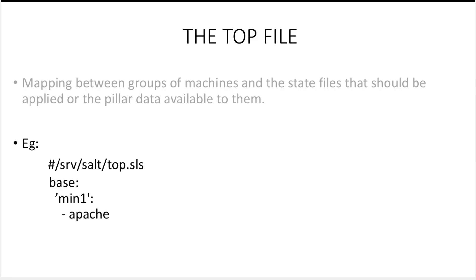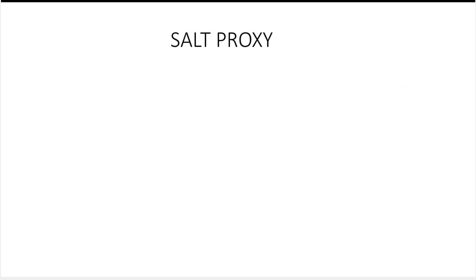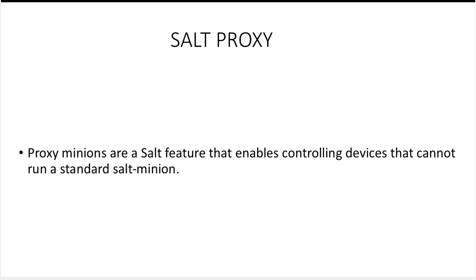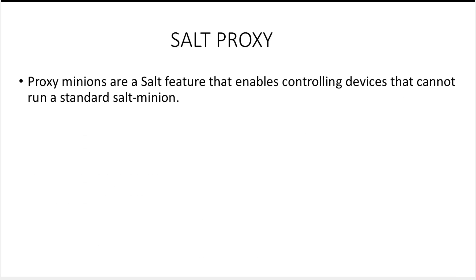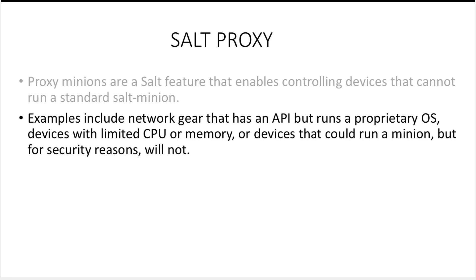So we are going to explore pillar, state file, and top file in much more detail in the demo, so even if you don't understand the examples, it's okay. Next we have salt proxy. Salt proxy is a very important feature of salt which enables controlling devices that cannot run a standard salt minion. Examples can include network gear which runs a proprietary OS, devices with limited CPU memory, and devices that could run a minion but for security reasons will not.